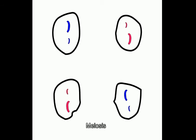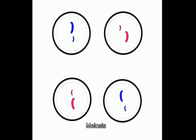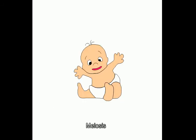The cell membrane appears in all those cells. As a result of meiosis, a baby is created.